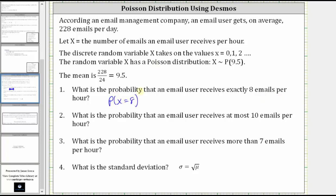Number two: what is the probability that an email user receives at most 10 emails per hour? At most 10 means less than or equal to 10.